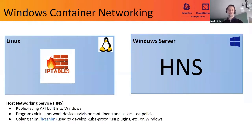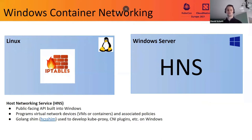First and foremost, let's take a look at HNS, which stands for Host Networking Service. This is a public-facing API that ships inbox with Windows and is used to network virtual devices. It is also used to develop projects part of Kubernetes, such as Kube Proxy and CNI plugins.